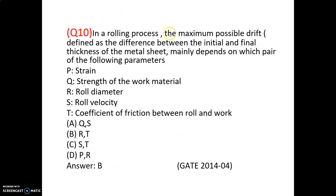In a rolling process, the maximum possible draft — the difference between initial thickness and final thickness of the metal sheet — mainly depends on roll diameter and coefficient of friction between the roll and the work. It does not depend upon strain or strength of the work material, or roll velocity. Draft = initial thickness − final thickness.